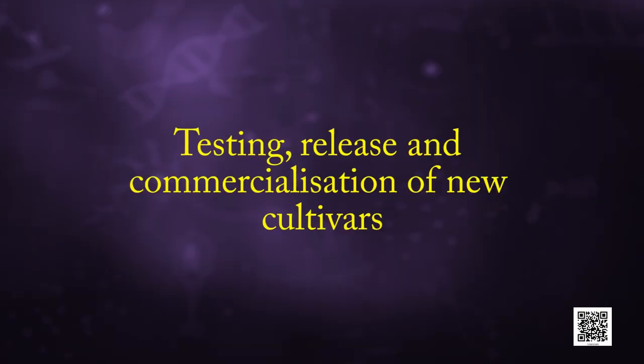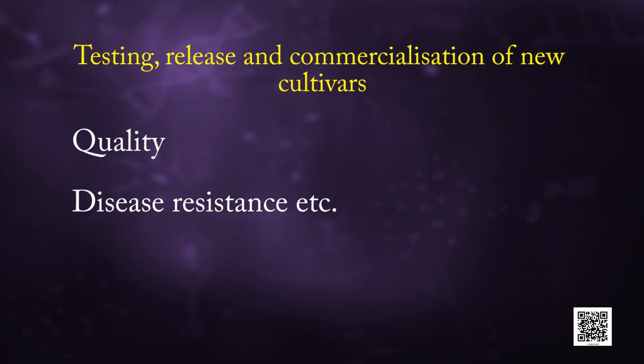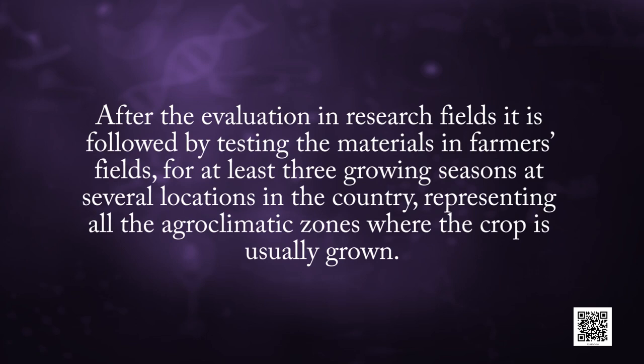Fifth, testing, releasing and commercialization of new cultivars. The newly selected lines are evaluated for their yield and other agronomic traits like quality, disease resistance, etc. This evaluation is done by growing these in research fields and recording their performance under ideal conditions like fertilizer application, irrigation and other crop management practices. After evaluation in research fields, it is followed by testing the material in farmers' fields for at least three growing seasons at several locations representing all the agro-climatic zones where the crop is usually grown. The material is evaluated in comparison to the best available local crop cultivar, that is a check or reference cultivar.